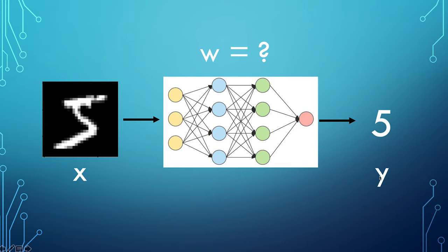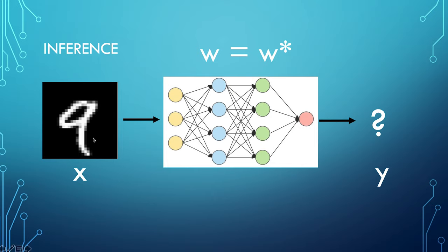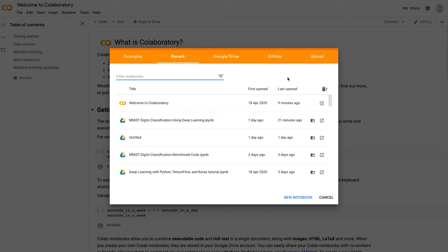During the training phase, we give a lot of images to the network along with the corresponding labels — we know what the numbers in those images are. With time, after the network sees every image, it learns to calculate the correct weights. We reach a point where the network has optimal weights, denoted w*, which means we're happy with the predictions. After that, we can perform inference: give it a new image it hasn't seen before, and the network will use the trained weights to predict — for example, 'this image is a nine with 98% confidence.'